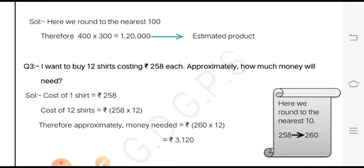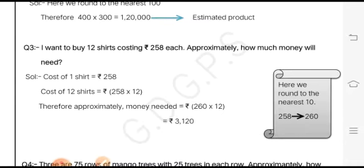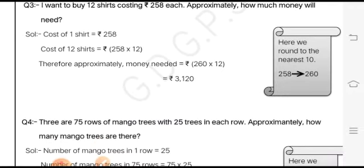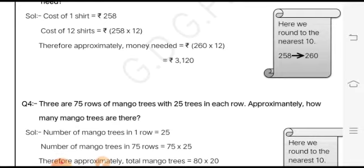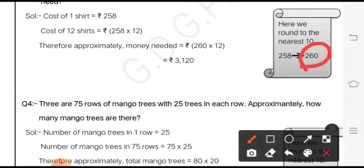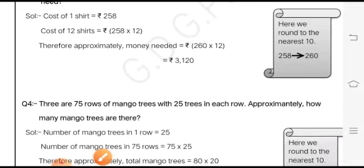Question number three is a word problem: I want to buy 12 shirts, each costing 258 rupees, and I have to find the approximate amount required. We know the cost of one shirt is given as 258, then the cost of 12 shirts is 258 into 12. But since we have to find the approximate value, that means we have to first round off 258, and it's rounded off to 260. So we get the estimated product as 3,120. This is the approximate amount required.